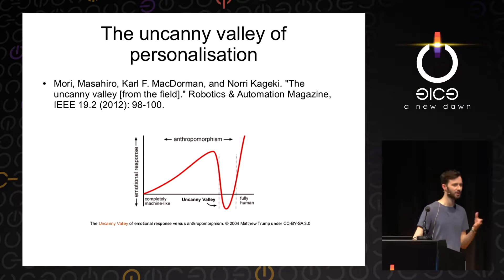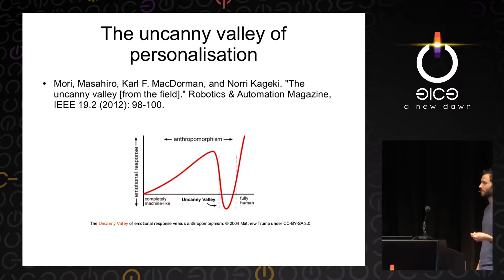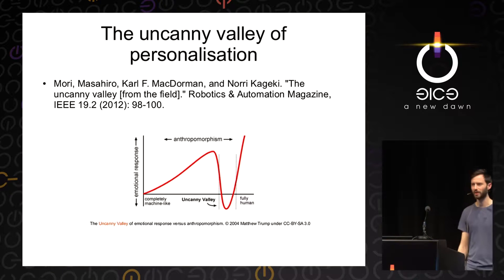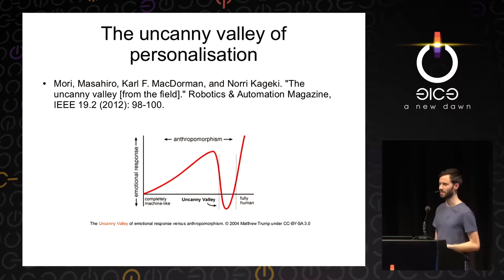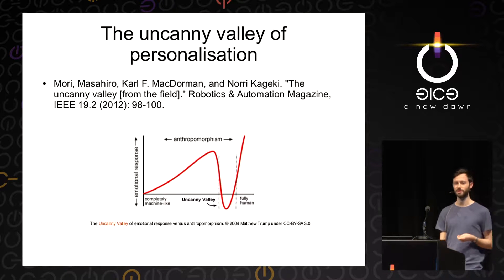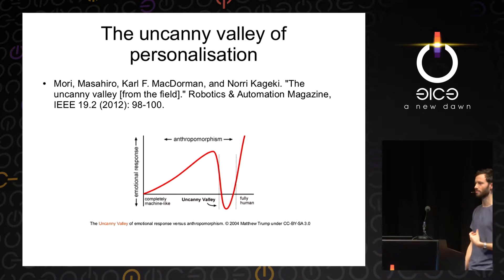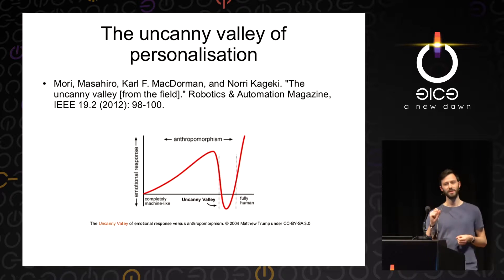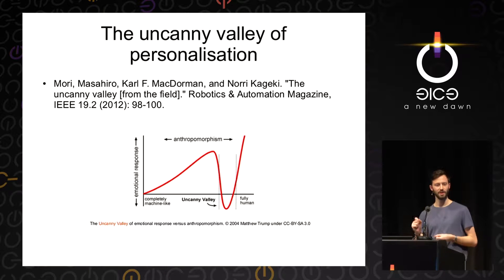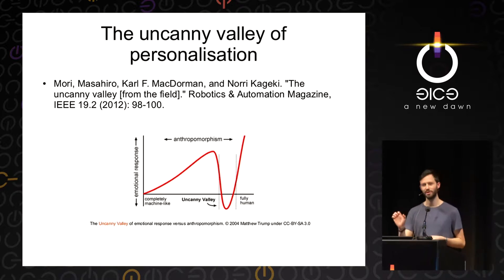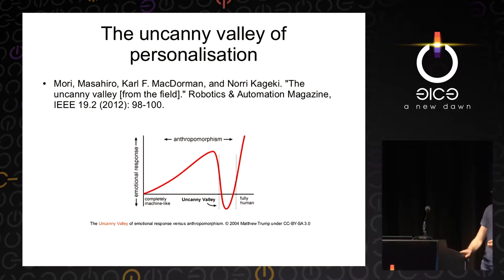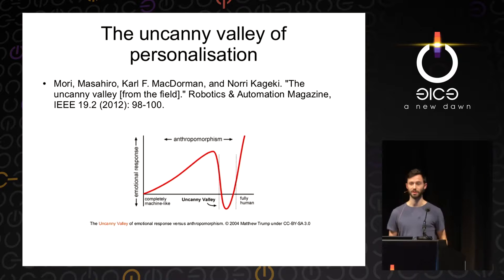There's also a psychological problem with personalization: if you get too much of it, people tend to get freaked out. There's a parallel with robotics research from the 1970s — they found that a little bit of human features makes people respond better to robots, but only up to a point. After a certain threshold, there's something called the uncanny valley, where the robot looks too much like a human and people get unsettled. Some marketing companies are seriously worrying about a similar effect with targeted personalization.